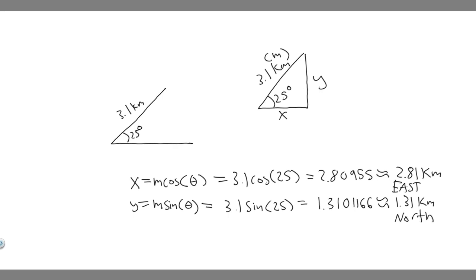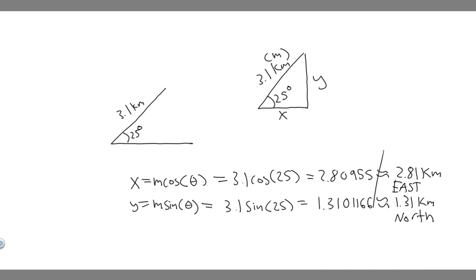So 2.81 kilometers is how far they have to go east, and 1.31 kilometers is how far they have to go north to get to the same location. These are your answers — hopefully you found this useful. Thank you.